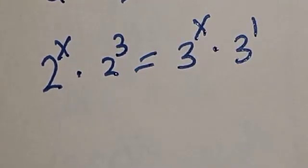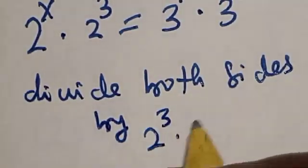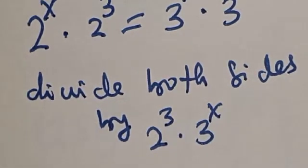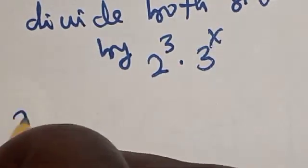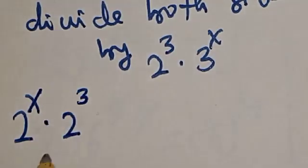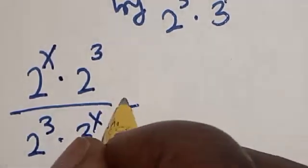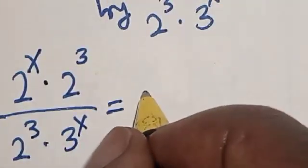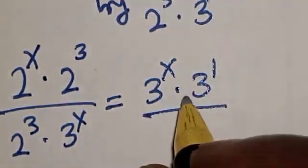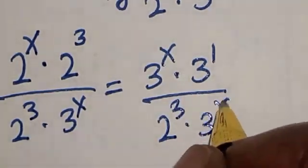Then let's divide both sides by 2 raised to power 3 multiplied by 3 raised to power s. Now we have 2 raised to power s multiplied by 2 raised to power 3 divided by 2 raised to power 3 multiplied by 3 raised to power s, is equal to 3 raised to power s multiplied by 3 raised to power 1 divided by 2 raised to power 3 multiplied by 3 raised to power s.